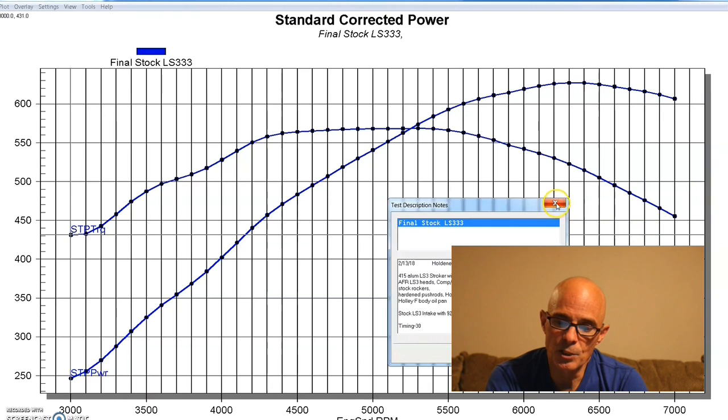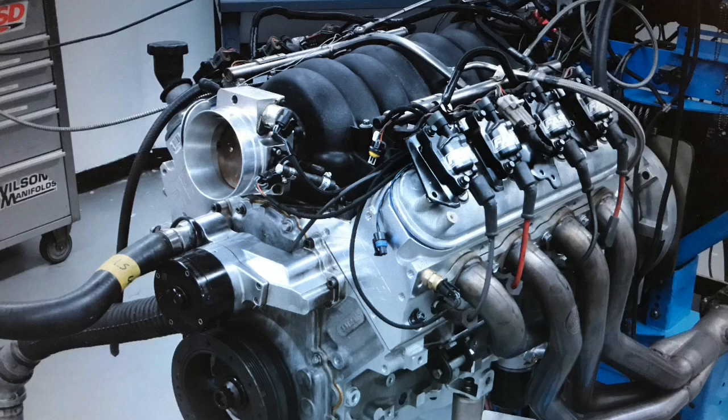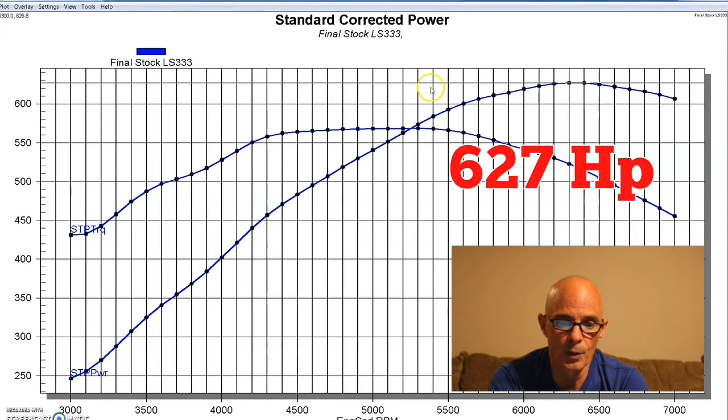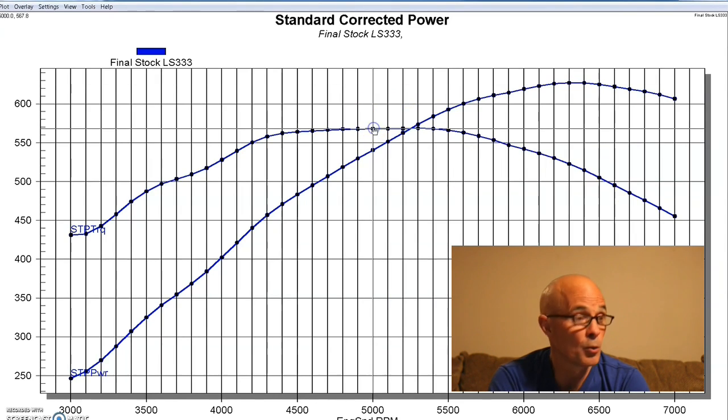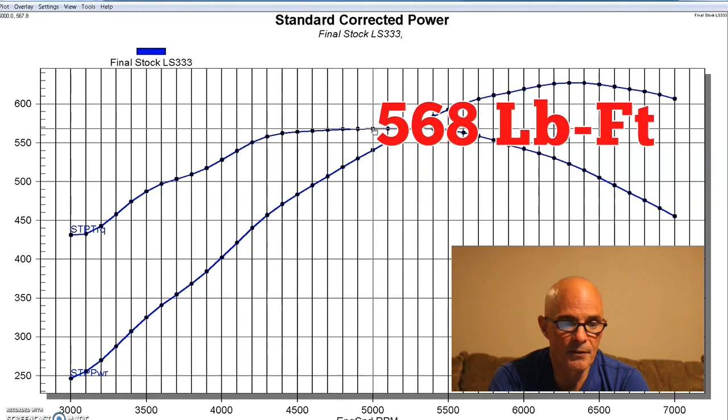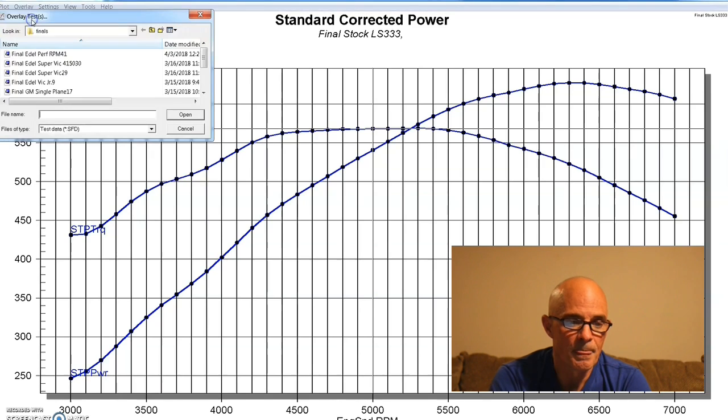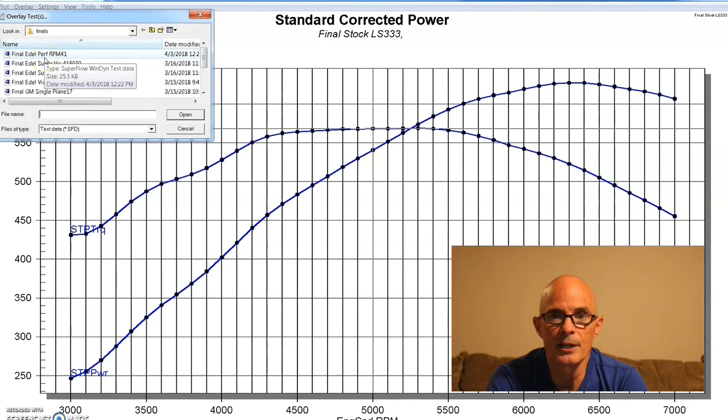Our first test was to run the factory LS3 intake. Equipped with a factory LS3, our 416 produced 627 horsepower and 568 foot-pounds of torque. To get things started, we're going to start off with a couple of carburetor intakes, the dual-plane stuff, because we're going to have a couple of dual-plane intakes first.